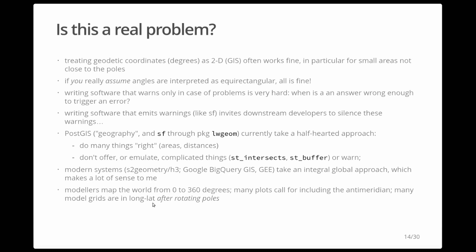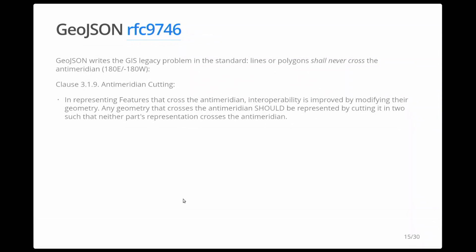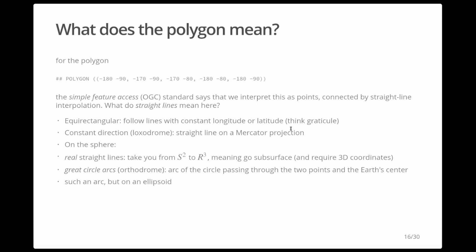Another aspect: weather forecast data often ranges from 0 to 360 degrees, not minus-180, and you can use rotating poles for global grids. On the other hand, GeoJSON is a popular standard for feature data — points, lines, polygons — and its RFC states that polygons shall never cross the anti-meridian; any geometry crossing it should be cut in two. This is really driven by legacy GIS and visualization, and choosing a different anti-meridian would break this.